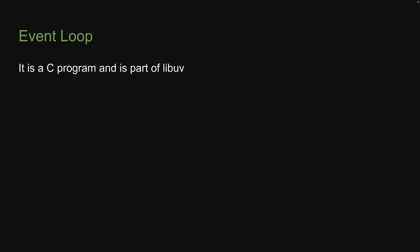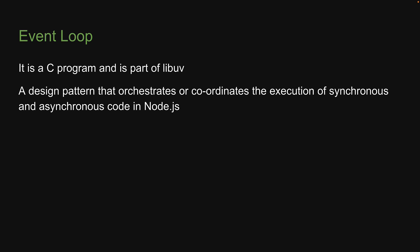What is the event loop? Technically, it is just a C program. But you can think of the event loop as a design pattern that orchestrates or coordinates the execution of synchronous and asynchronous code in Node.js. The way we are going to understand how the event loop works is a two-step process. In this video, we will take a look at a visual representation of the event loop, giving a brief overview of the different parts. Then, over the next few videos, we will conduct various experiments with code to better understand the visual representation.